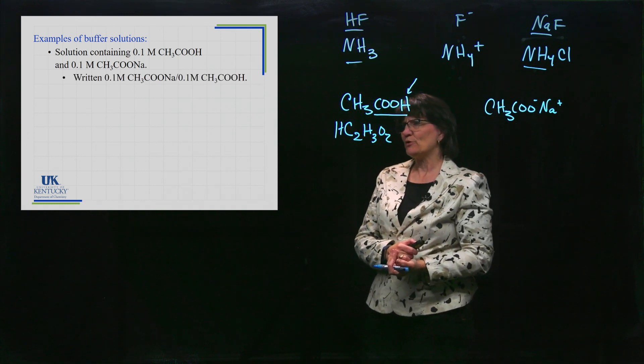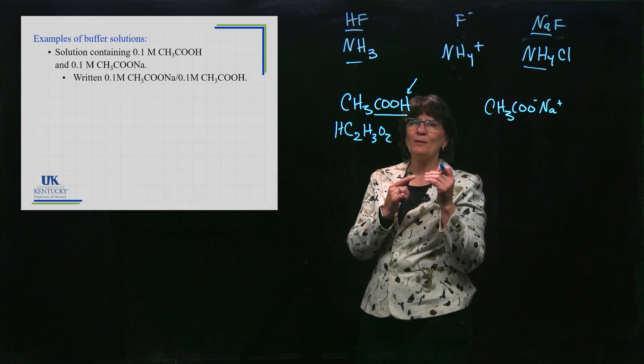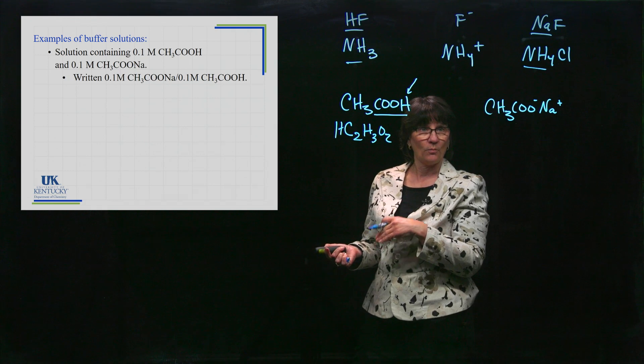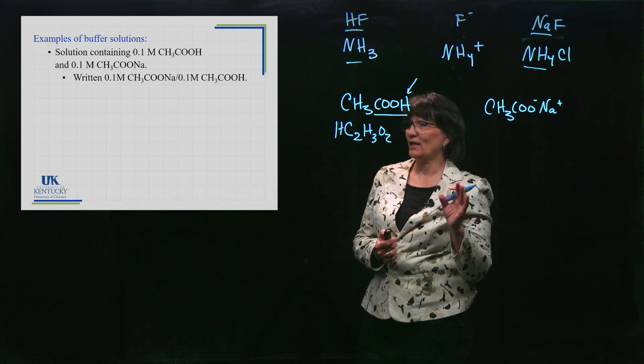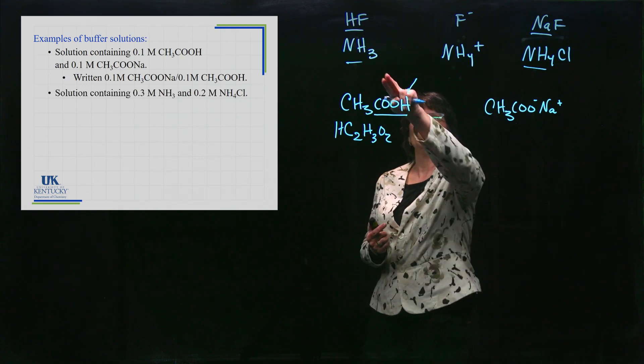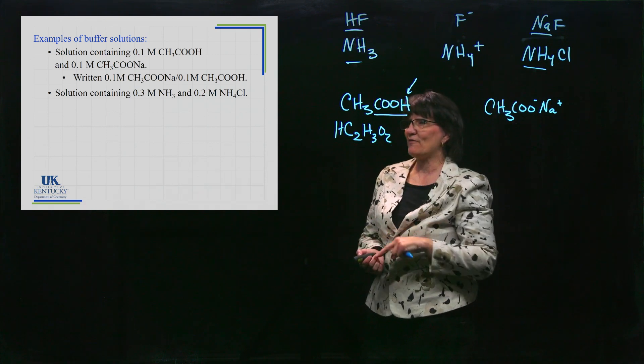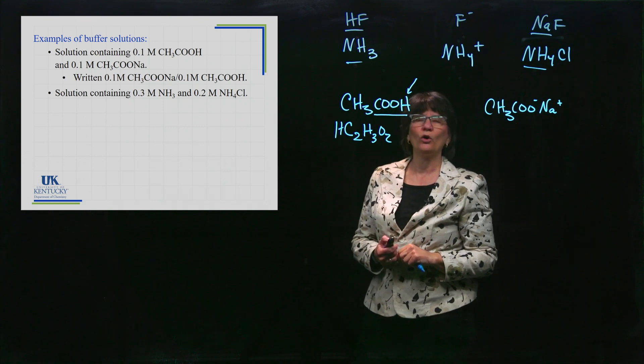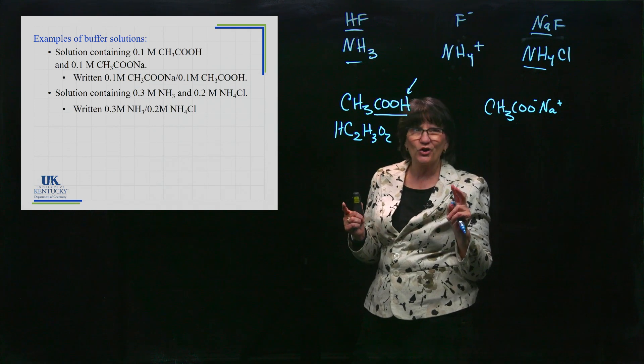See how it's written here - this is a common way of showing a buffer. You always write the base first, a slash, and then its acid form second. The reason for that order will become evident much later in our lesson series. This would be a way of writing this buffer if you know the concentrations: 0.3 molar ammonia solution and 0.2 molar ammonium chloride solution. We could write it like this - writing the base first and then the acid form second.